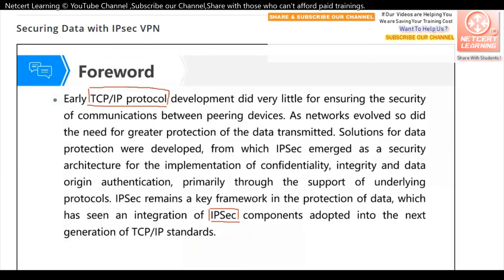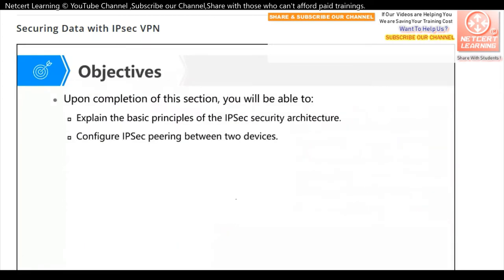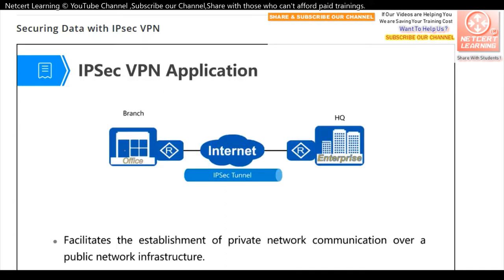We can use IPSec VPN to protect our data when it is transferred over the internet. Upon completion of this section, you will be able to explain the basic principles of the IPSec security architecture, and you will be able to configure IPSec peering between two devices. First, let's look at the IPSec VPN application.